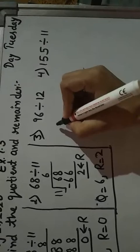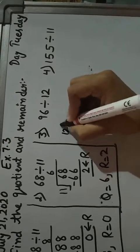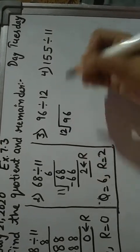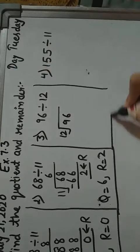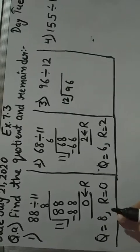Next question number 3: 96 divided by 12. This question you will do yourself, it's very easy, same as first part.